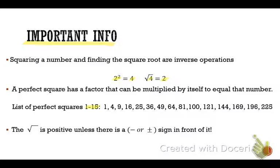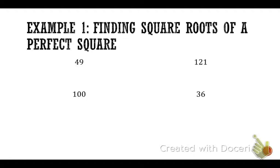Now, the radical — the radical is positive. So if all you see is the radical, which is the square root symbol, that's positive unless there's another sign in front of it. So finding the square roots, plural, of a perfect square — why would it be plural? More than one.